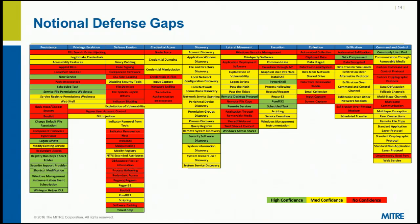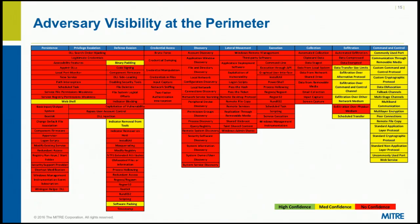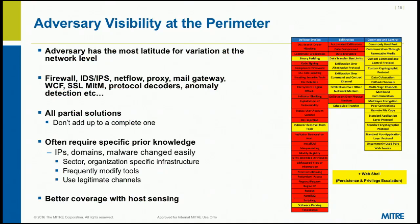Here's what your matrix might look like after analysis. Red means no confidence you can detect anything, yellow means some confidence, green means pretty confident you'll see what an adversary is doing. This one looks pretty bad — it's what you get with just perimeter defenses: an internet tap, PCAP, IDS alerts, and SSL inspection. You can have the most robust perimeter security, but if that's all you're doing, you can't see lateral movement, commands running on endpoints, credential dumping, et cetera. That's why we focus on host-based sensing.